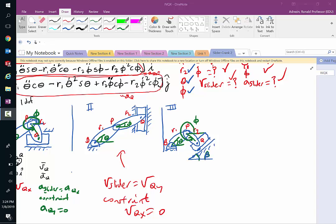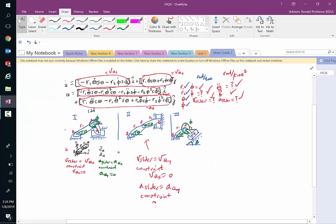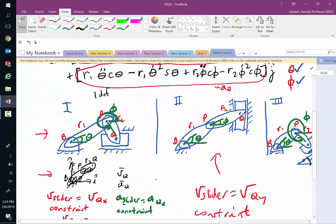In Slider Crank Part 1, I reviewed the horizontal case, which simply meant that the velocity of the slider here was just VQX, and we have a constraint that it can move up and down, so VQY equals zero.